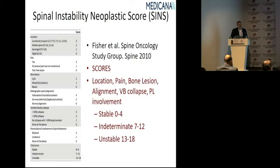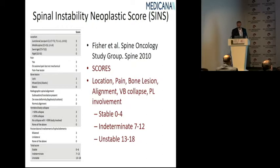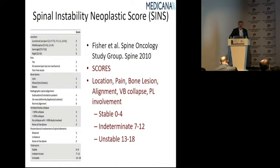Another important scoring system is the Spinal Instability Neoplastic Score, or SINS. It is based on location, pain, bone lesion, alignment, vertebral body collapse, and posterior-lateral element involvement. A score of 0–4 indicates stability, allowing non-surgical management. A score of 7–12 is indeterminate — we are not sure if it is stable or not.